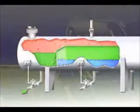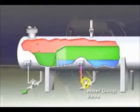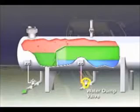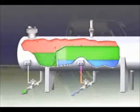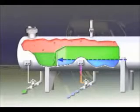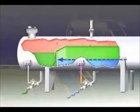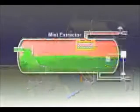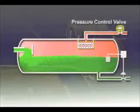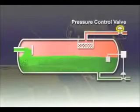The interface level controller senses the height of the oil-water interface and signals the water dump valve to release as much water from the vessel as is needed to maintain the oil-water interface at design height. The gas flows horizontally and exits through a mist extractor to a pressure control valve, which maintains constant vessel pressure.